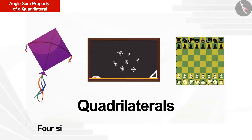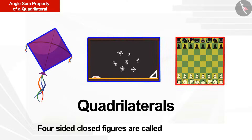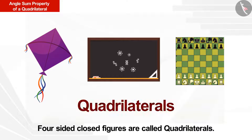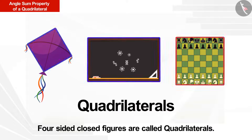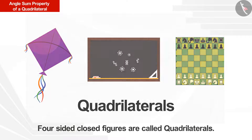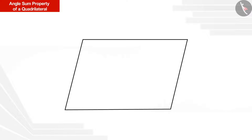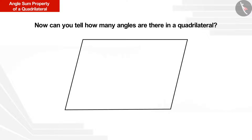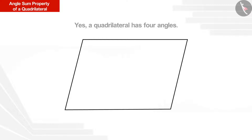Figures that have four sides are called quadrilaterals. A quadrilateral has four angles. All the angles are shown in the figure. Can you tell the sum of all interior angles of this quadrilateral?